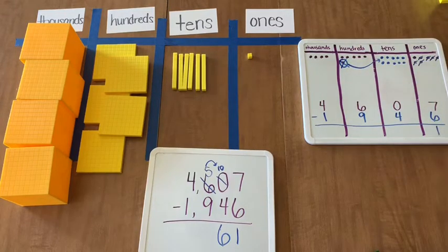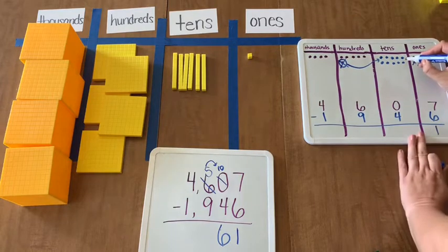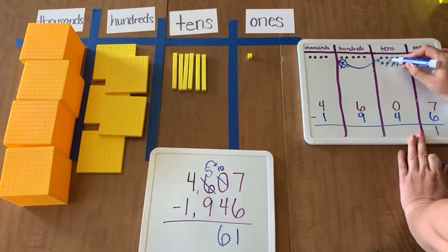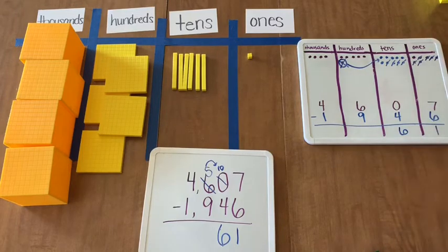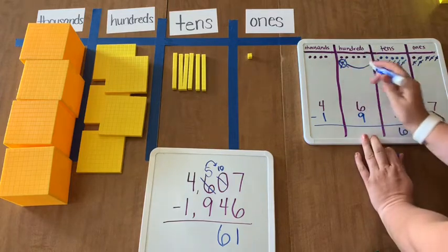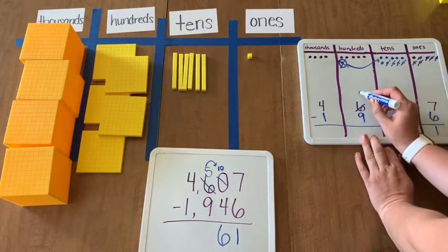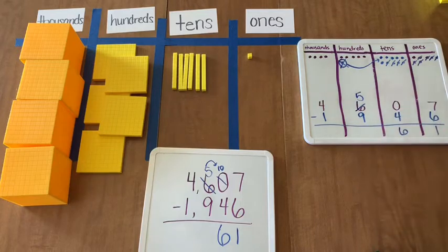Now that I have 10 tens, I can take away 4 tens. 1, 2, 3, 4 tens. And I have 6 tens left. Because I took away this 100, I now have 5 hundreds remaining.